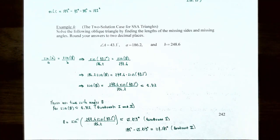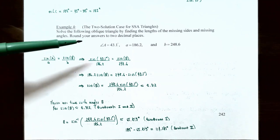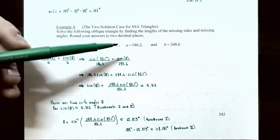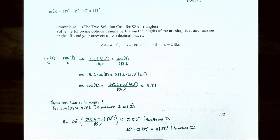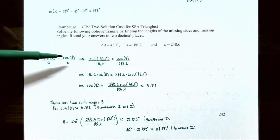In example four we will find two different possibilities for an oblique triangle. Example four is the two-solution case for an SSA triangle. Solve the following oblique triangle, rounding to two decimal places. The only information given is angle A = 43.1°, side A = 186.2, and side B = 248.6. We have two sides and one angle — a side-side-angle triangle — so we use the law of sines: sin(A)/a = sin(B)/b.